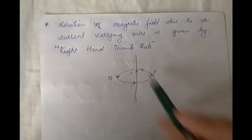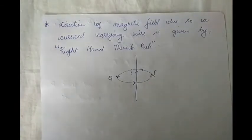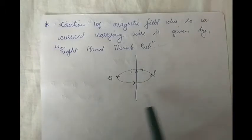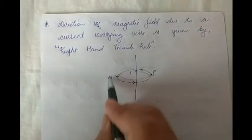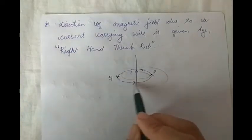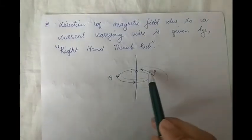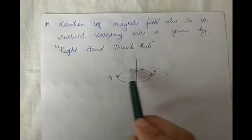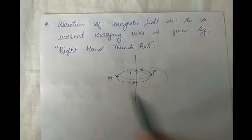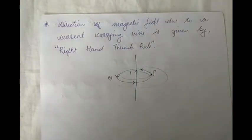We now know that whenever we have a current-carrying wire, this wire is going to generate its own magnetic field. At all points surrounding this particular wire we will have a magnetic field, and we will get concentric circles. At all points on the circumference of one circle, the magnitude of the magnetic field intensity will be the same, because all points lying on a particular circle are equidistant from this wire.